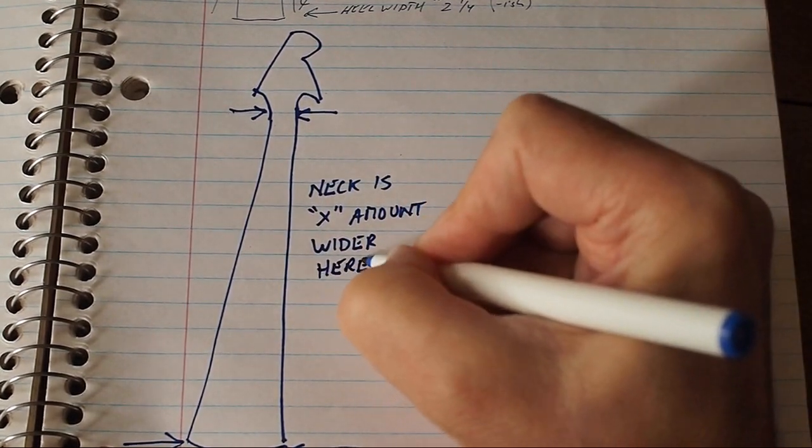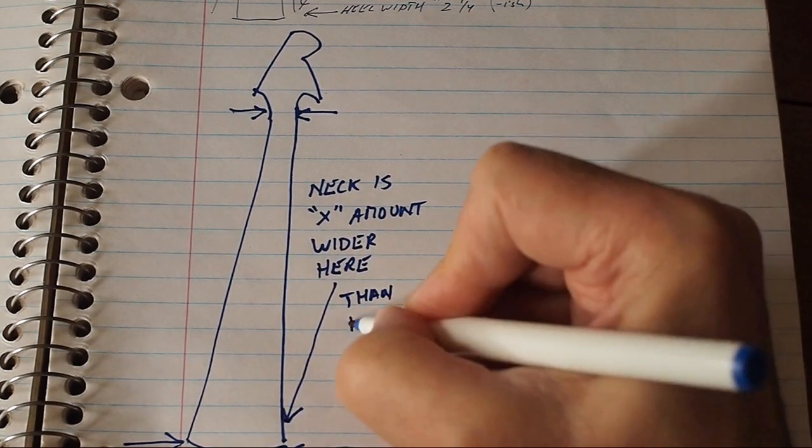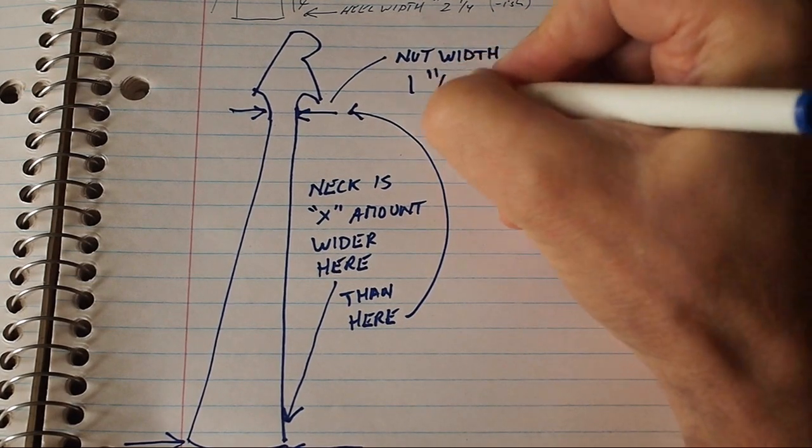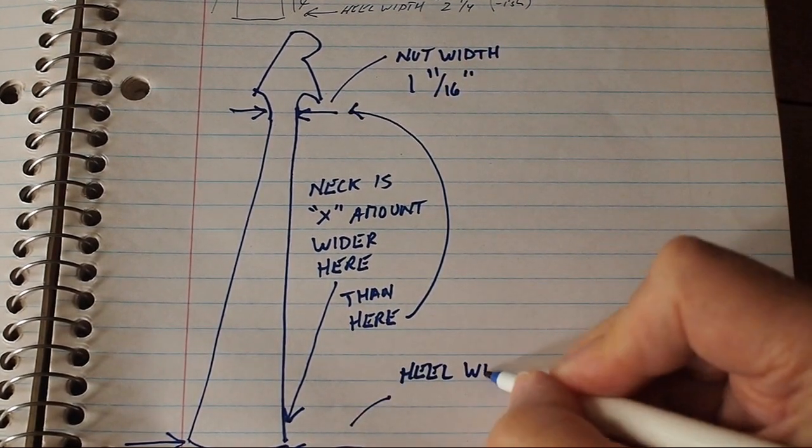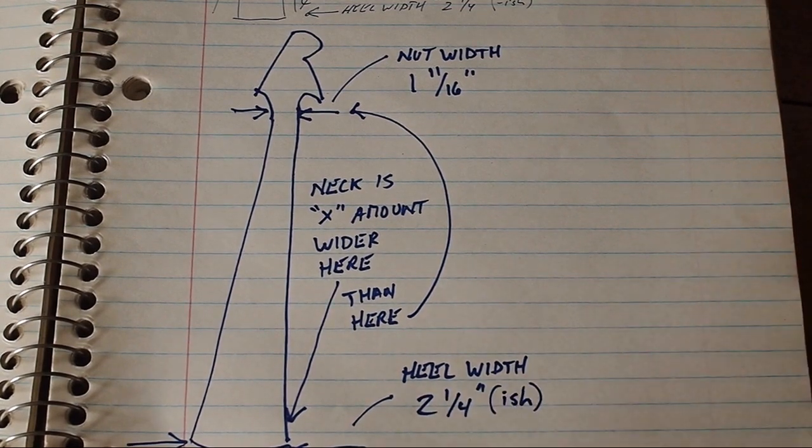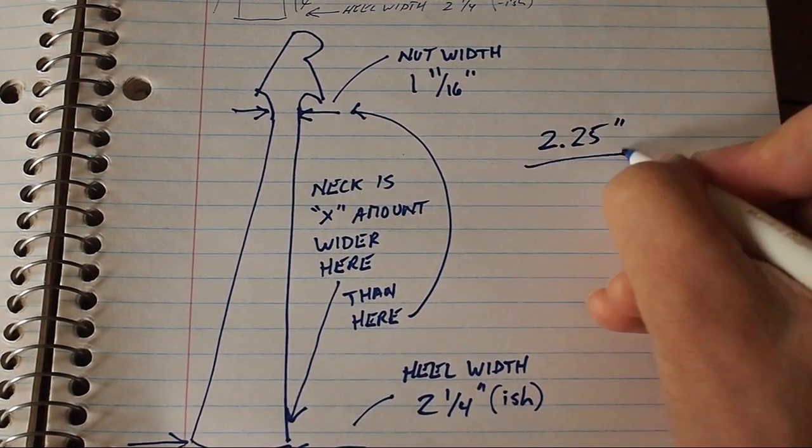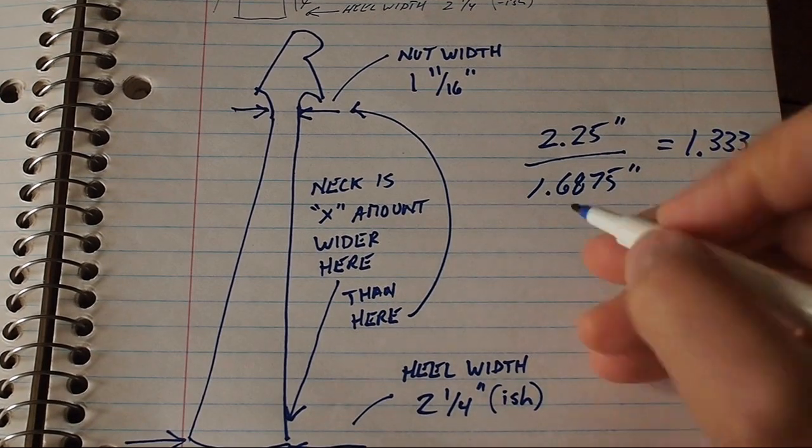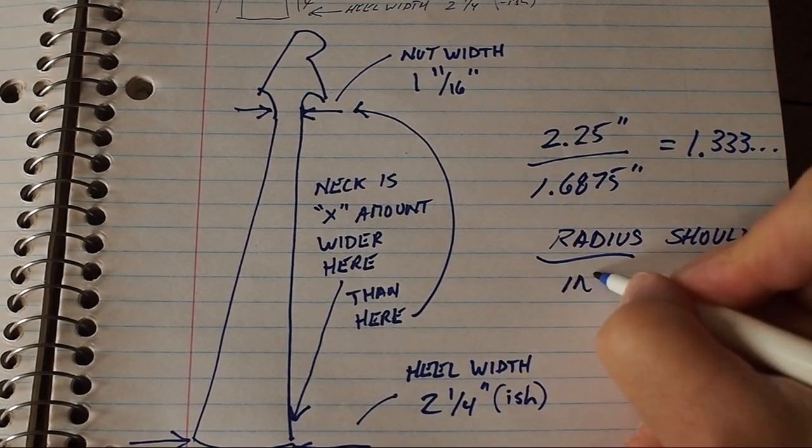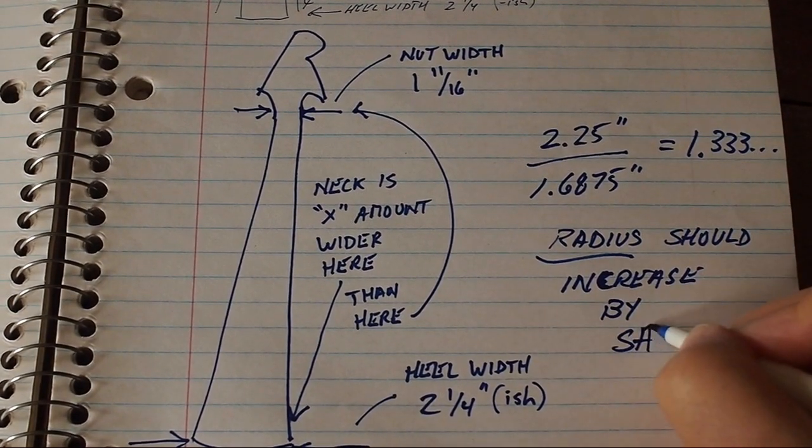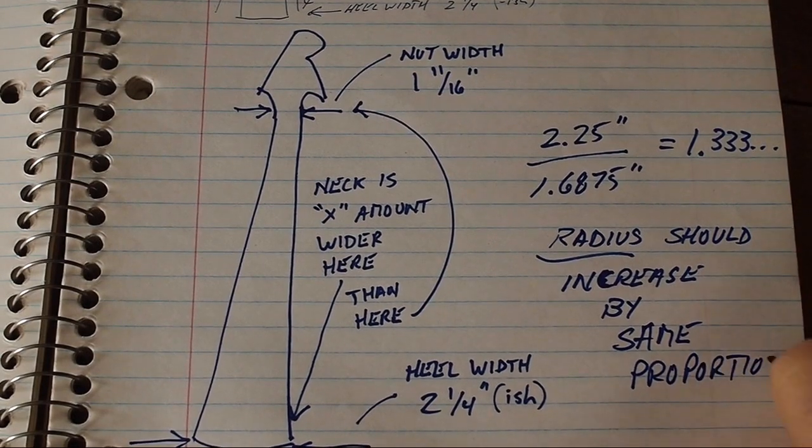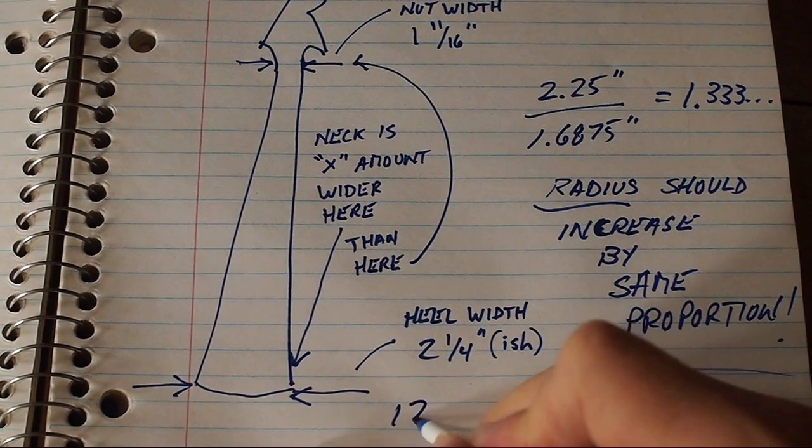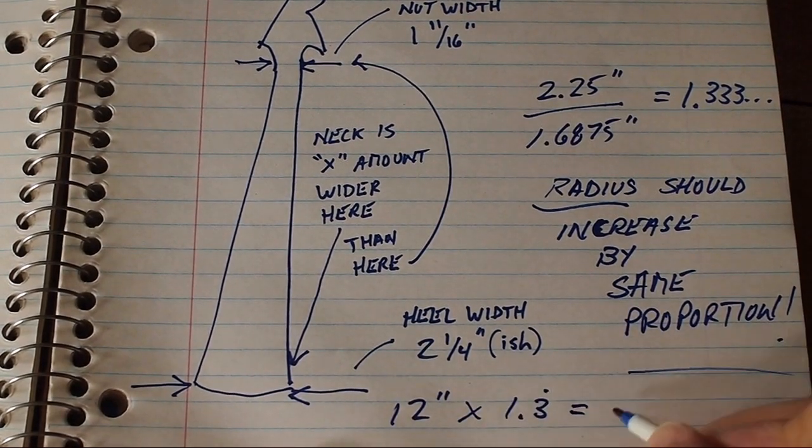So, say your guitar has a nut width of one and eleven sixteenths inches, and the fretboard is two and a quarter inches wide at the 22nd fret. Now these are pretty standard dimensions. So you take 2.25, two and a quarter, divided by 1.6875, which is one and eleven sixteenths, and you see that the fretboard is one and one third times wider at the 22nd fret than it is at the nut. So, to have even action all across the fretboard, the radius should also be one and one third times larger at the 22nd fret than it is at the nut. An example of this would be a 12 inch radius at the nut, and a 16 inch radius at the other end.